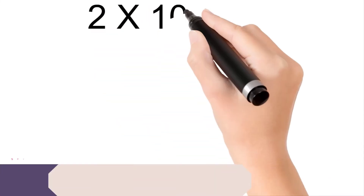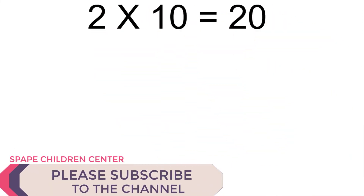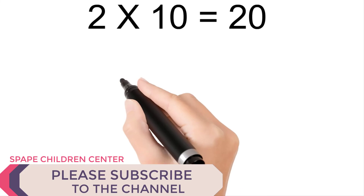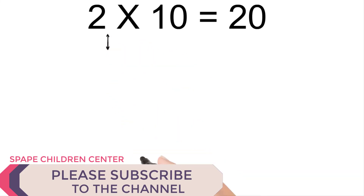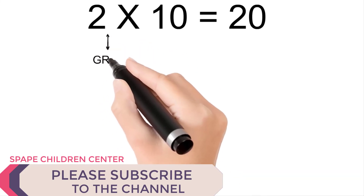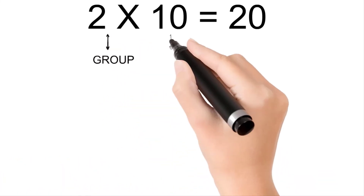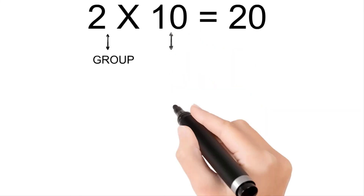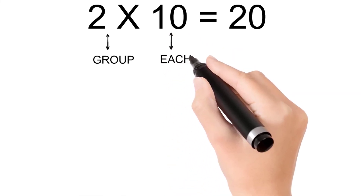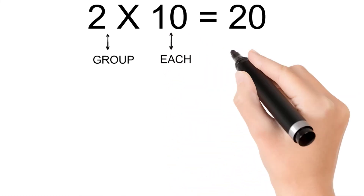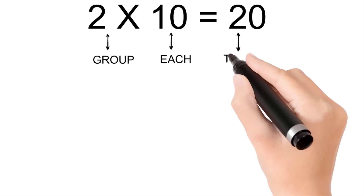Two times ten is twenty. Two is group, ten is each, and twenty is total.